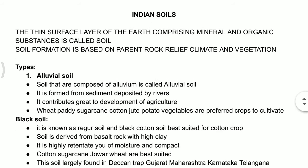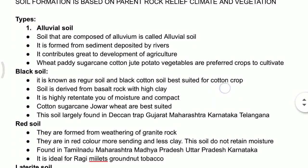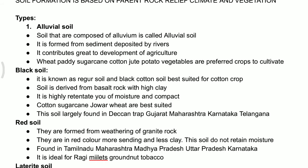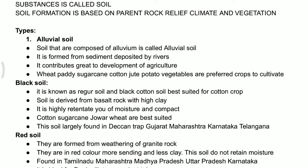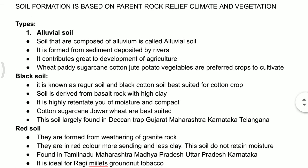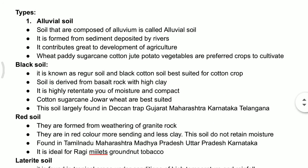The formation of soil is based on parent rock, relief features, climate, and vegetation. The parent rock is nothing but the rock from which the soil is produced. There are many soils in India: alluvial soil, black soil, red soil, laterite soil, desert soil, and mountain soil.